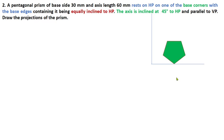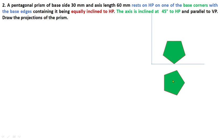After the rotation of 90 degrees, the position of the pentagon in the top view is supposed to be like this and we have two options. This pentagon edge is parallel to HP. After the rotation it becomes perpendicular to the reference line XY. We have one more option — we can keep this edge on the left side as well, corner on the left and edge on the right side.